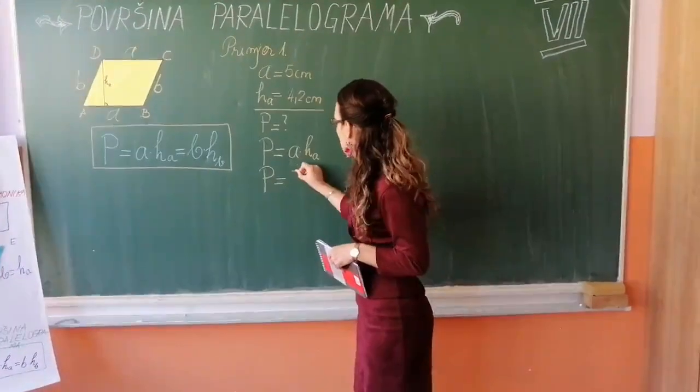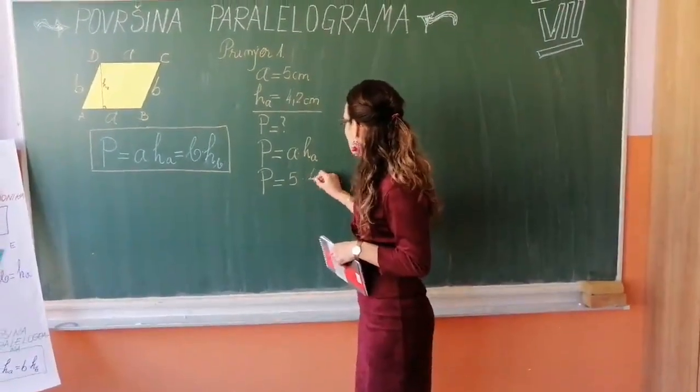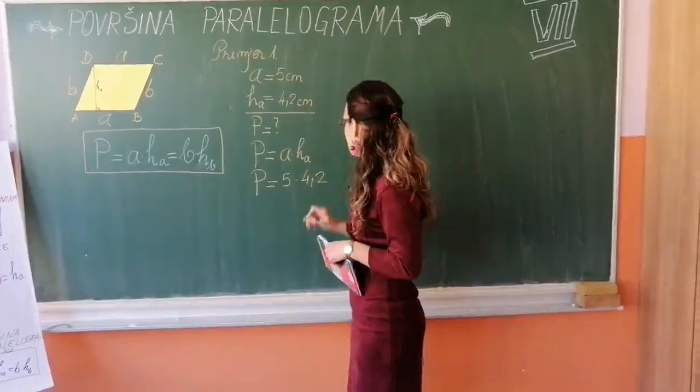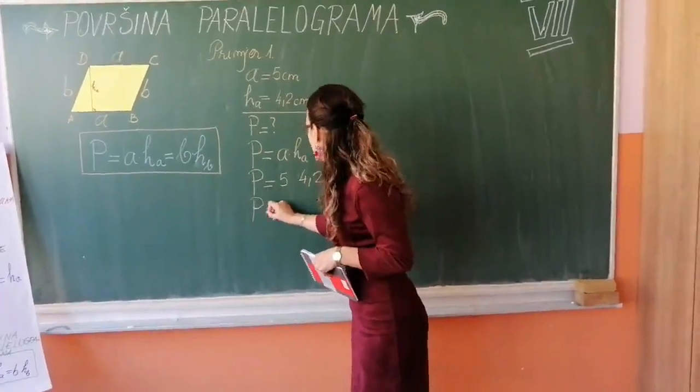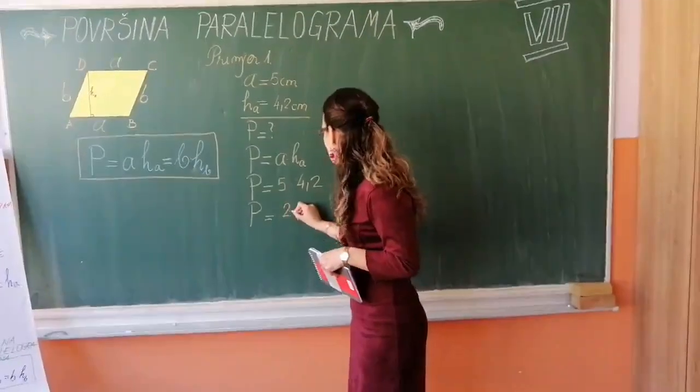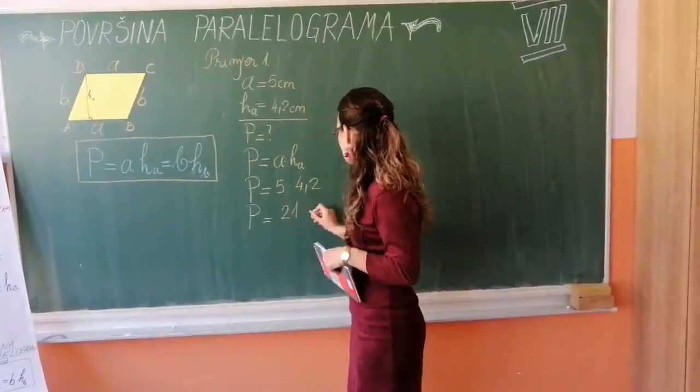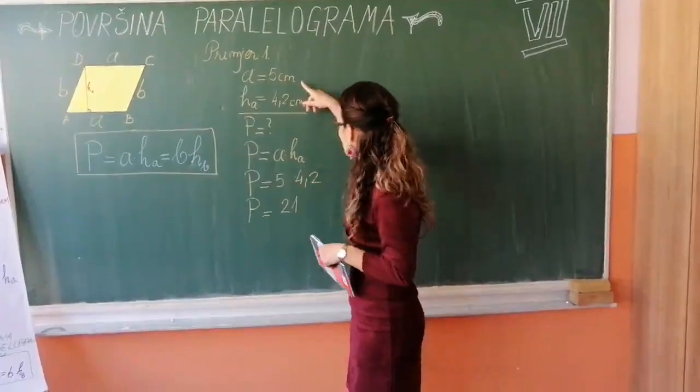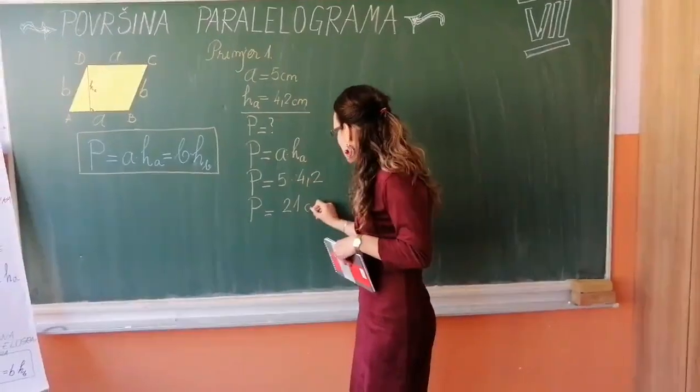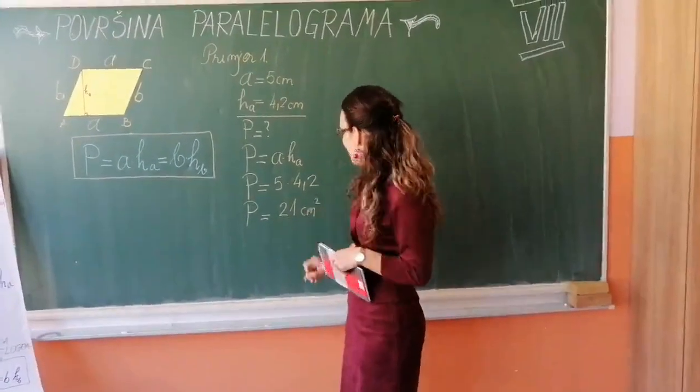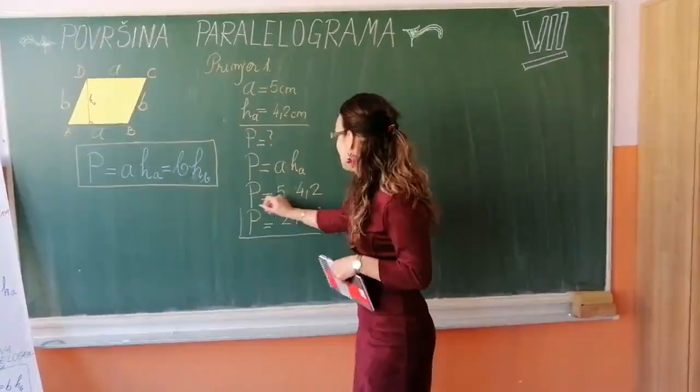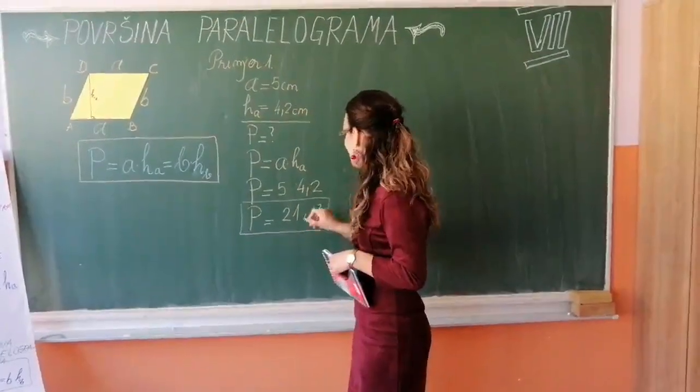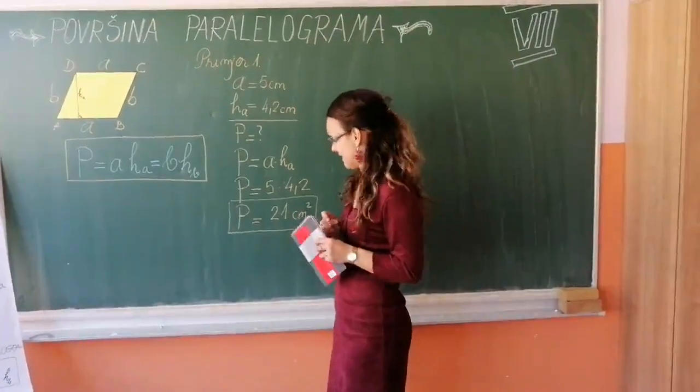Ovdje već imamo formulu kako izračunati površinu paralelograma. Pa napišemo P jednako A puta ha. Uvrstimo poznate podatke, to će biti jednako 5 puta 4,2. Dobićemo jednako 21, pažimo sa jedinicama, jedinice centimetara kvadrat. Dakle, naša površina ima vrijednost 21 centimetara kvadrat.